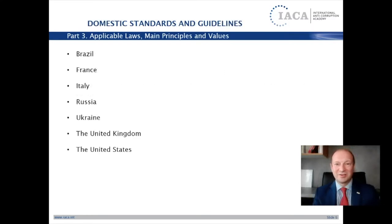Domestic guidance on anti-corruption compliance is published by government authorities in Brazil, France, Italy, Russia, Ukraine, the United Kingdom, and the United States. When you look for domestic guidance on anti-corruption compliance, you should consider that not always are these documents translated into English. Sometimes you need a local lawyer or at least a person who speaks the local language and can search in domestic legal databases.